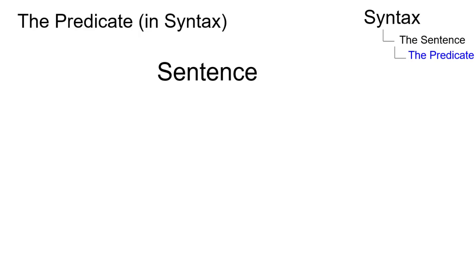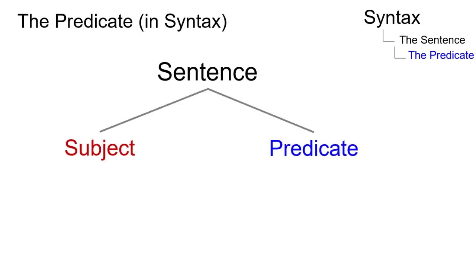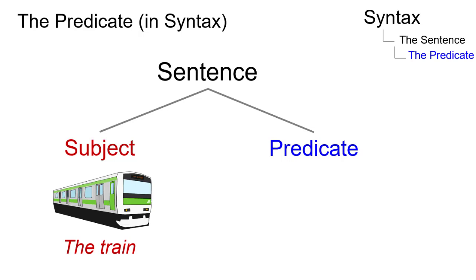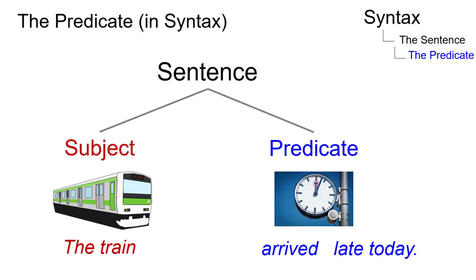Simple sentences can be divided into two parts: a subject and a predicate. The former states what the sentence is about, the latter what is asserted or said about the subject.